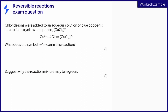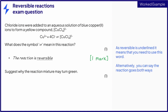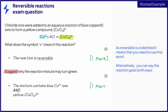The first part of the question asking what the symbol stands for is very common and should be an easy mark to pick up. You should state that the reaction is reversible, or give the alternative answer that the reaction goes both ways. The next part of the question uses the 'suggest' command word, meaning you won't have specifically learned why the reaction mixture may turn green, but you need to apply your knowledge of reversible reactions to explain it. As it is a reversible reaction, both the forward and reverse reactions occur, meaning all three ions given in the equation will be present. As the copper(II) ion is blue and the copper compound is yellow, the reaction mixture will be a mixture of these two colors and appear green. Note that the mark scheme uses the word 'and', meaning you must specify both points to gain the mark.